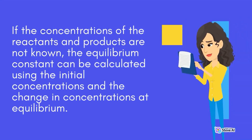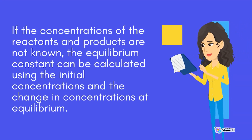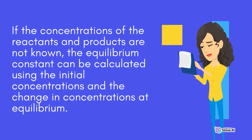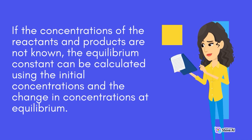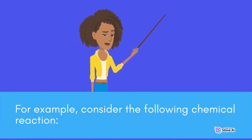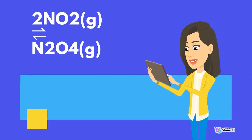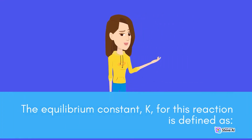If the concentrations of the reactants and products are not known, the equilibrium constant can be calculated using the initial concentrations and the change in concentrations at equilibrium. For example, consider the following chemical reaction: 2NO₂(g) ⇌ N₂O₄(g). The equilibrium constant, K, for this reaction is defined as...